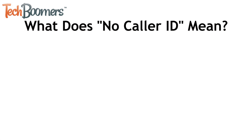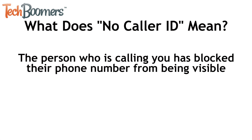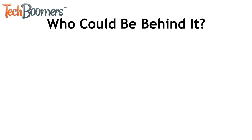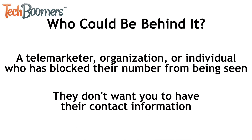First of all, what exactly does it mean when you see no caller ID pop up on your phone? It means that the person who is calling you has blocked their phone number from being visible. This means that they purposely want to hide their contact information from you so you can't track the call back to them. If you receive a no caller ID call, who could be behind it? It could be coming from a telemarketer, organization, or even an individual who has blocked their own phone number from being seen. Although you don't know who's calling, what you do know is that they don't want you to have their contact information.